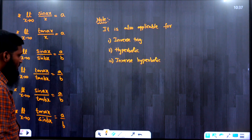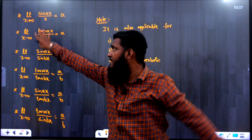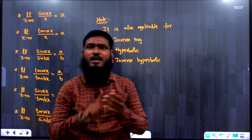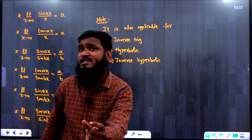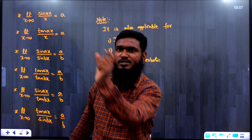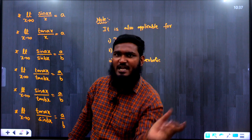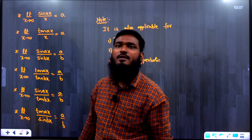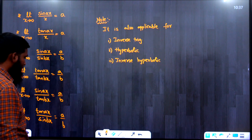Quick revision: limit x→0: sin(ax)/x = a; tan(ax)/x = a; sin(ax)/sin(bx) = a/b; tan(ax)/tan(bx) = a/b; sin(ax)/tan(bx) = a/b; tan(ax)/sin(bx) = a/b.